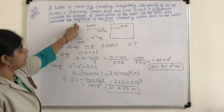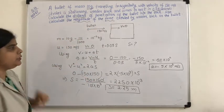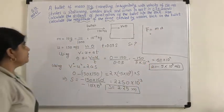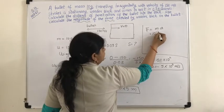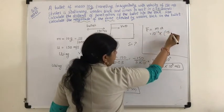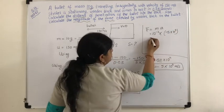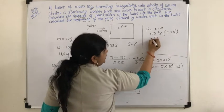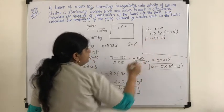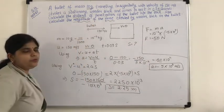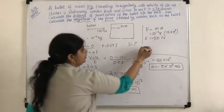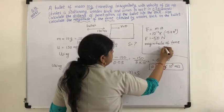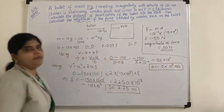Now one more thing we need to calculate: the magnitude of force. The formula for force is force equals mass into acceleration. Mass of the bullet is 10 to the power of minus 2, and acceleration is minus 5 into 10 to the power of 3. This gives minus 50 Newtons. But what has been asked is only the magnitude of force, so therefore magnitude of force equals 50 Newtons. This is the final answer.